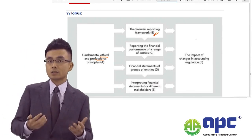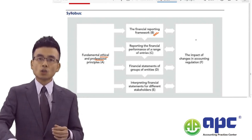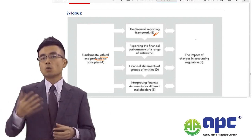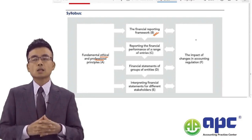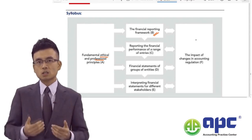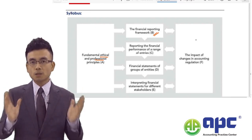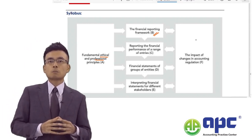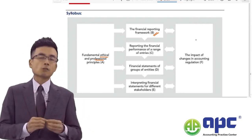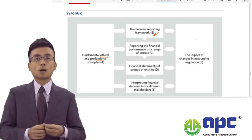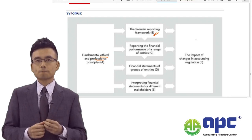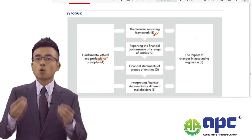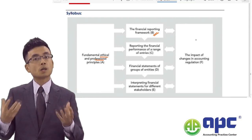The examiner at SBR level is not particularly interested in asking you again what the IASB does, what the IFRS Interpretation Committee does, or for asset and liability definitions. Instead, the examiner will give you a scenario requirement — for example, to discuss a deferred tax liability — and you're expected to show the accounting treatment, explaining why it is accounted for in that way.